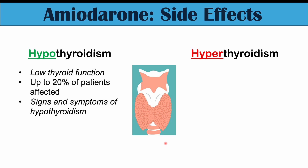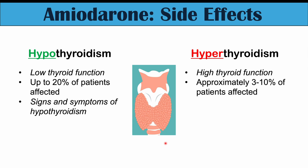Other patients can get hyperthyroidism, or high thyroid functioning. The backbone of the amiodarone molecule is similar in some way to thyroid hormones, which is why it can cause issues with thyroid functioning. Approximately 3% to 10% of patients can be affected with hyperthyroidism. Signs and symptoms include feeling too hot, heat intolerance, weight loss, increased bowel movements, sweating, and tremors.